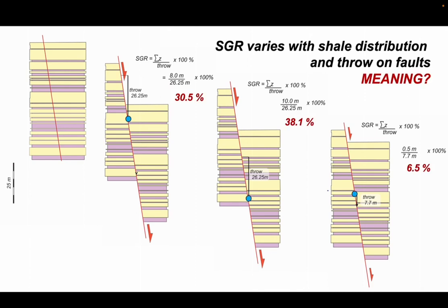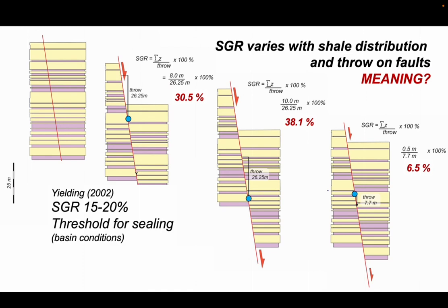So what do these various values mean? Graham Yielding calibrated SGR against the sealing properties of faults that were actually measured. He found for his study area in the North Sea, if the shale gouge ratio was above somewhere between 15% and 20%, that particular part of a fault zone was sealing.